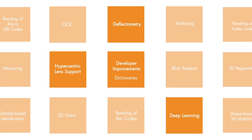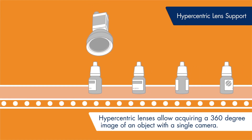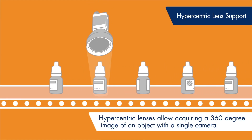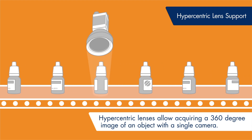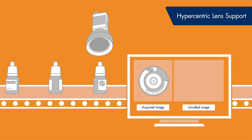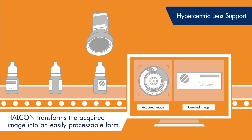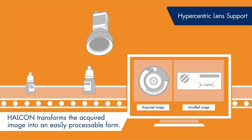A new camera model now allows correcting distortions in images recorded with hypercentric camera lenses. These lenses can depict several sides of an object simultaneously, thus enabling a 360-degree view of the test object. With this technology, users only need a single camera system to inspect, for example, cylindrical objects.